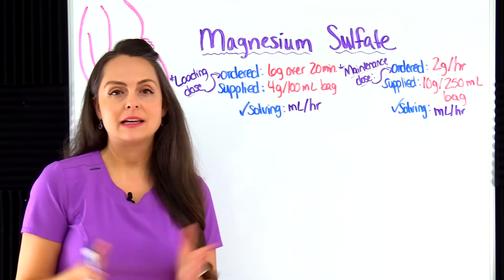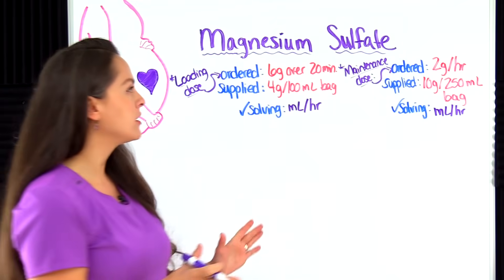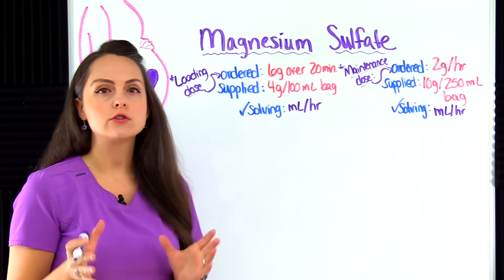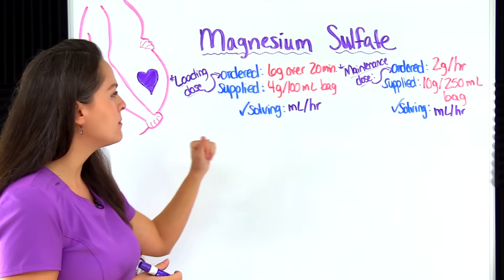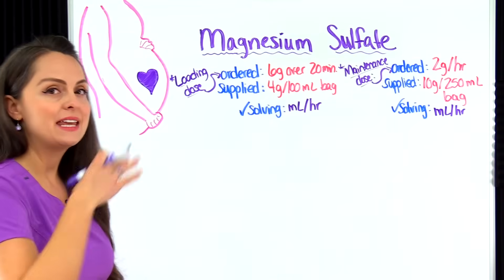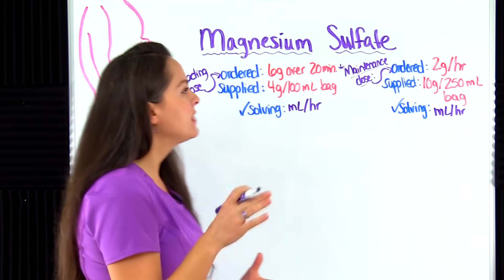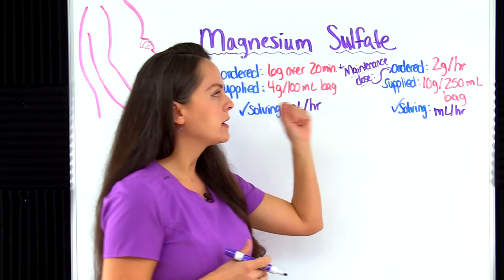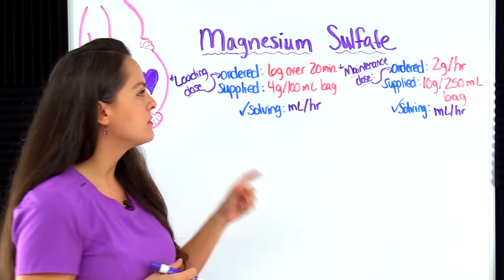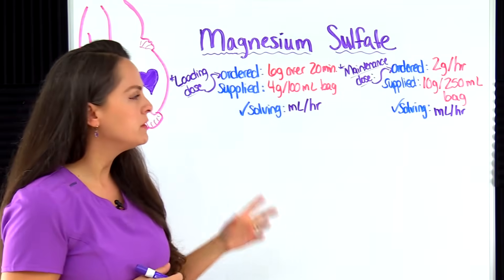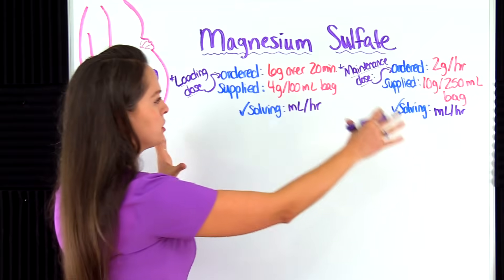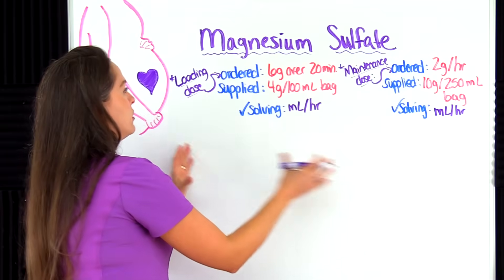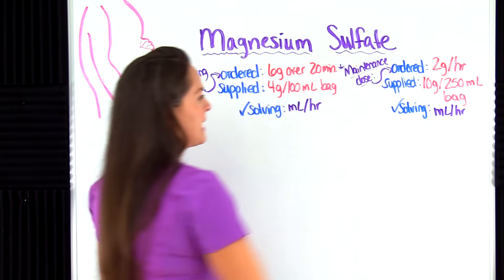The third problem has a patient ordered IV magnesium for eclampsia, and we're calculating two answers. First, a loading dose of six grams over 20 minutes using a bag of four grams per 100 mL. Then after the loading dose, a maintenance dose of two grams per hour using a bag of 10 grams per 250 mL. We need to find the infusion rate in milliliters per hour for each.